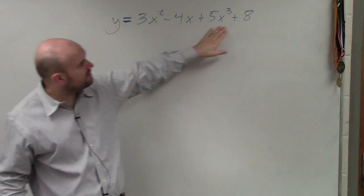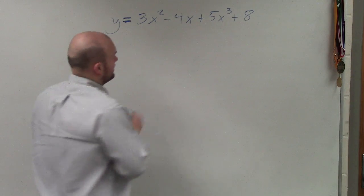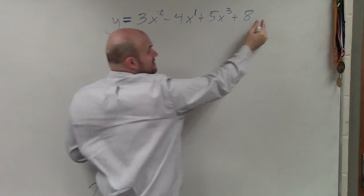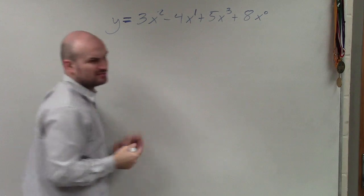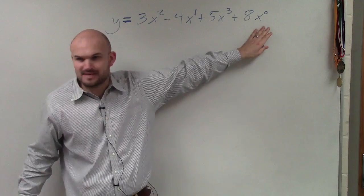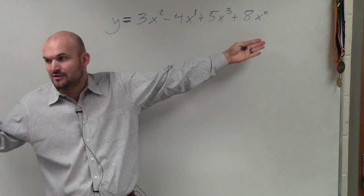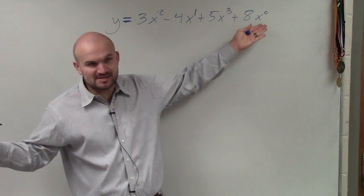If you remember, if you look at the powers here, if you just have x, that's really x to the first. And if you don't have an x, that's really x to the 0. Does everybody see how 8 is the same thing as 8 times x to the 0? Because x to the 0 has to be 1, and then 1 times 8 would be 8.